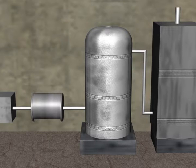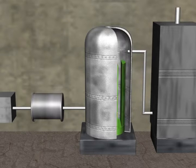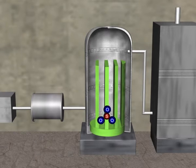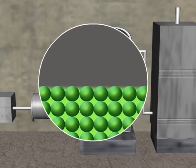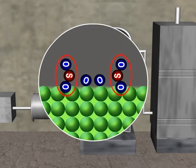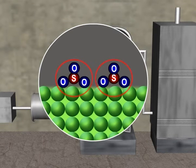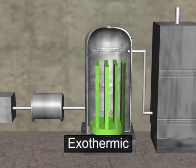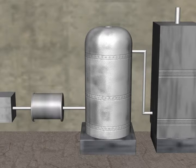The catalytic tower is the most important tower, where the catalyst vanadium pentoxide is present. Sulfur dioxide is catalytically oxidized to sulfur trioxide with atmospheric oxygen. The reaction is reversible as well as exothermic in nature. This is the key reaction for the process, and a high yield of sulfur trioxide will lead to more production of acid.